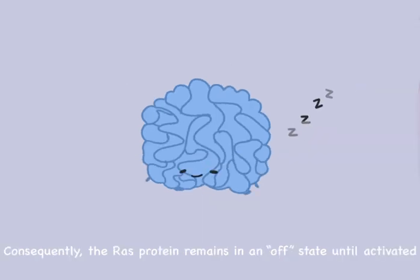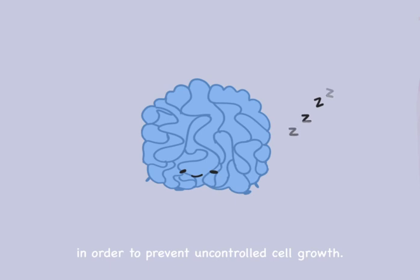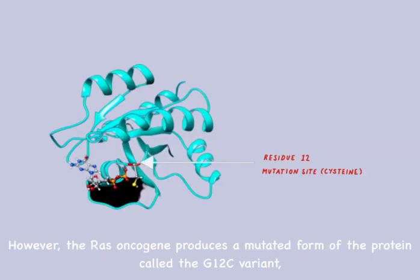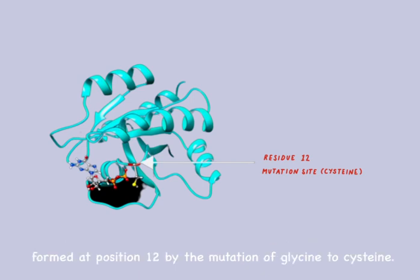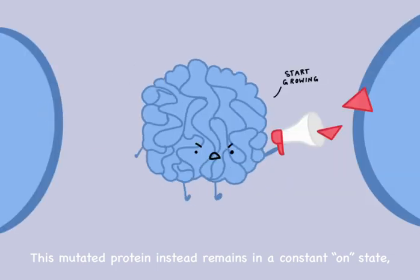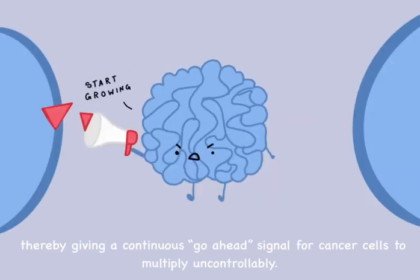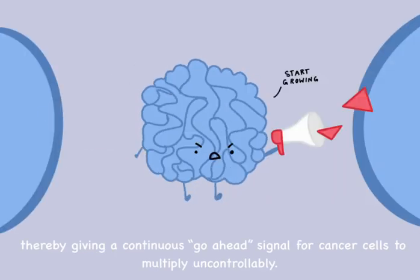Consequently, the Ras protein remains in an off state until activated in order to prevent uncontrolled cell growth. However, the Ras oncogene produces a mutated form of the protein called the G12C variant, formed at position 12 by the mutation of glycine to cysteine. This mutated protein instead remains in a constant ON state, thereby giving a continuous go-ahead signal for cancer cells to multiply uncontrollably.